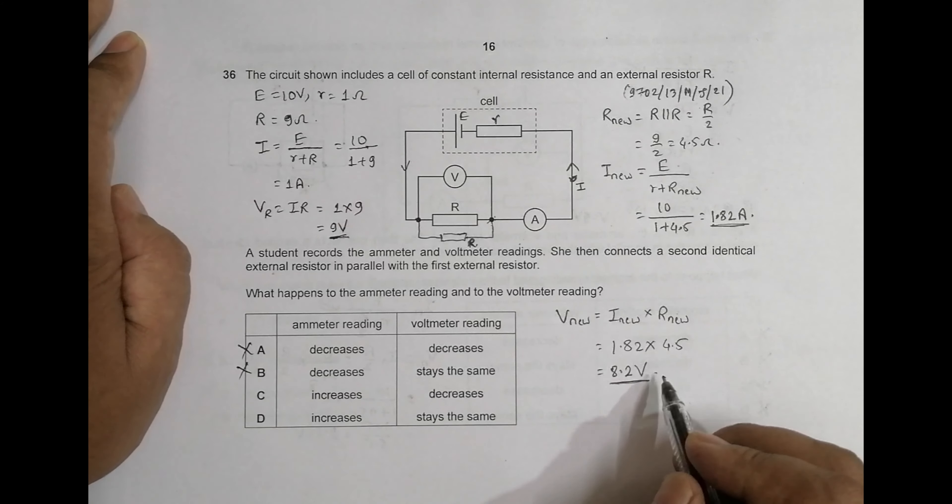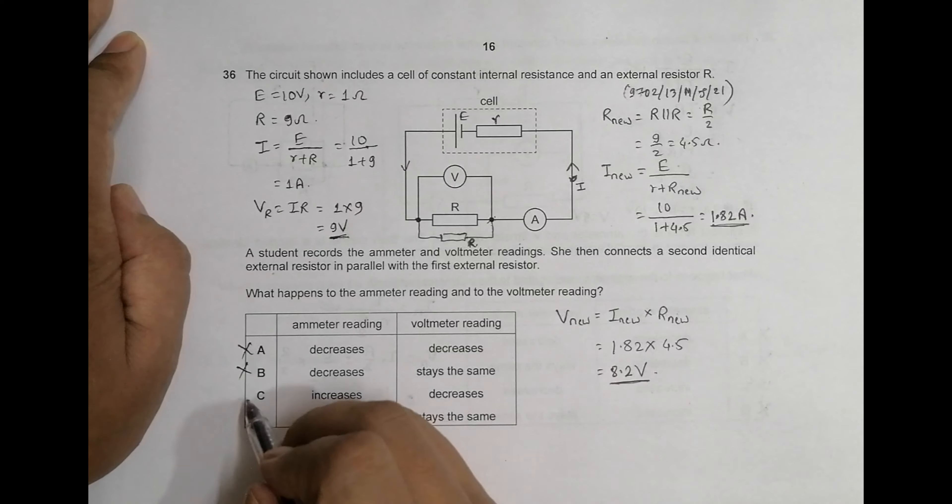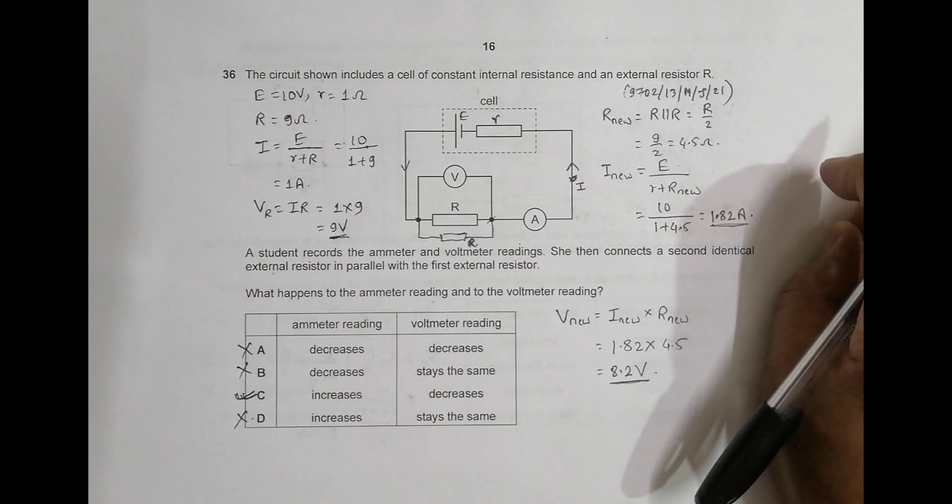See, initially we got 9 volts and now it is 8.2 volts. That means the voltmeter reading should decrease—yes, it has decreased here. So this is the correct choice and this one is incorrect. This is the pure quantitative treatment of this problem.